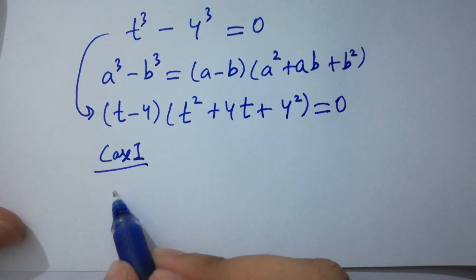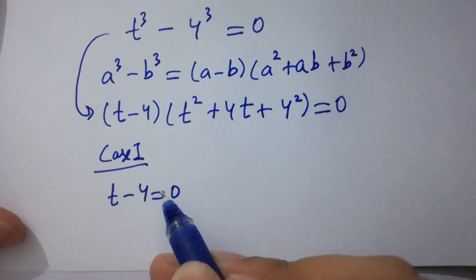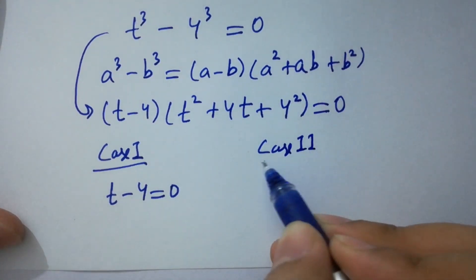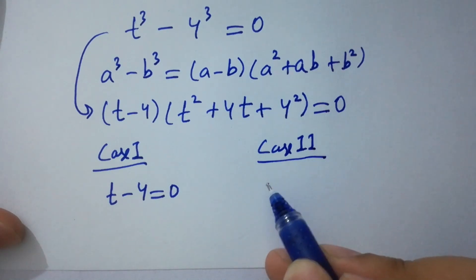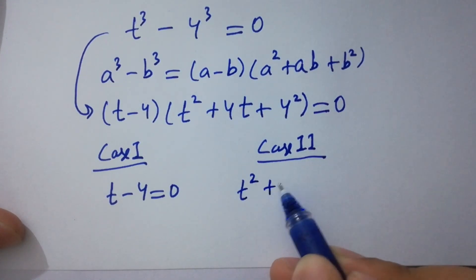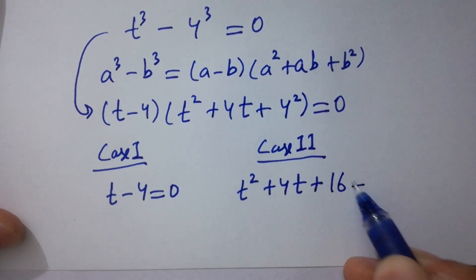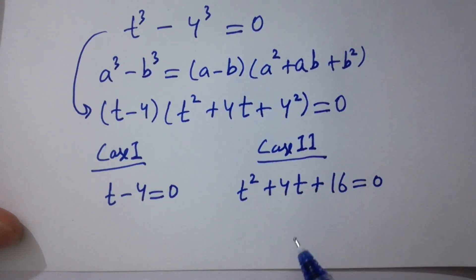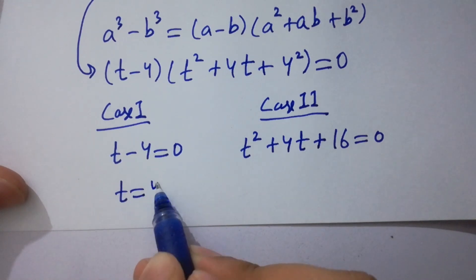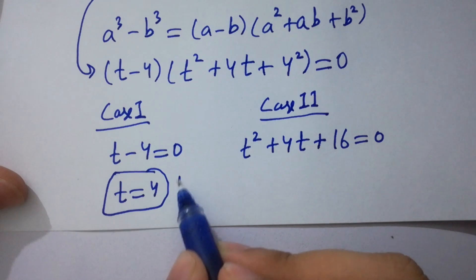So we have two cases. Case 1: t minus 4 equals 0, giving us t equals 4. Case 2: t squared plus 4t plus 16 equals 0. From Case 1, we get the real solution t equals 4.